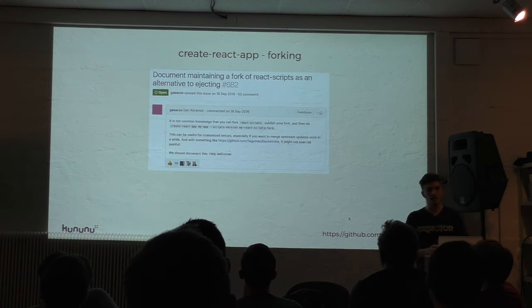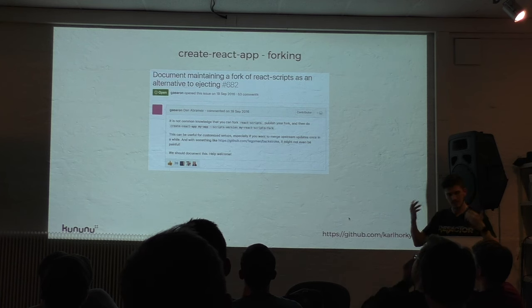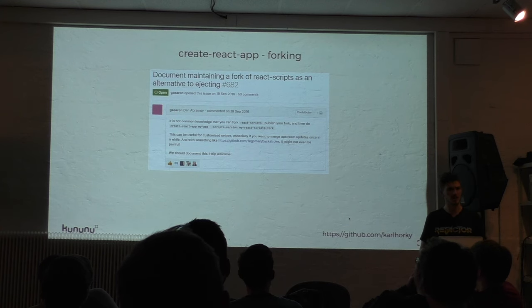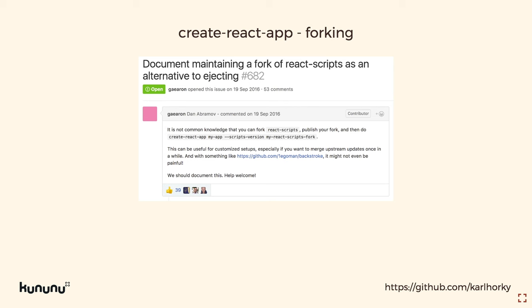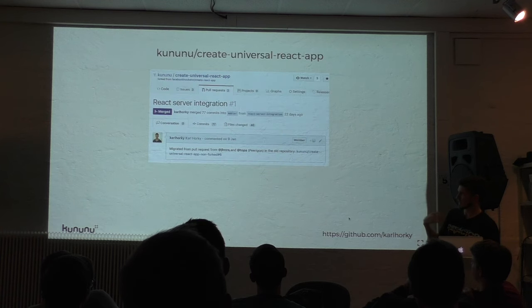Looking further into the documentation, I found another option: forking Create React App instead of ejecting. You fork it — you have a copy of it in another GitHub repo — and you can pull in updates more easily. We decided to take this approach to allow us to build the universal app we wanted.